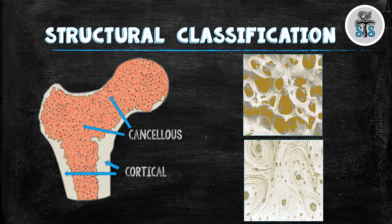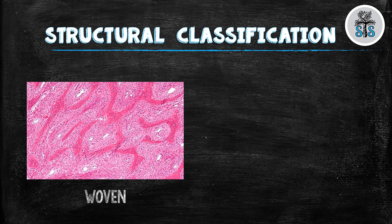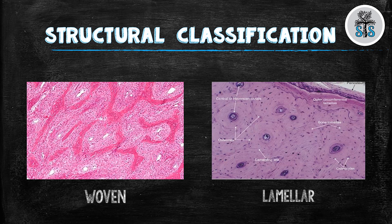We'll briefly discuss the microscopic level of bone, which is broken down into woven and lamellar bone. Woven bone is your immature or pathologic bone — it's weaker than lamellar bone, is random, and is primarily made of osteocytes. Lamellar bone is your mature bone created by remodeling of woven bone. It's stress-oriented and organized, and is much less flexible than woven bone.